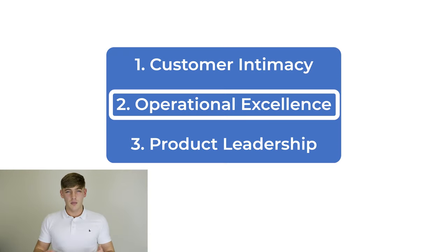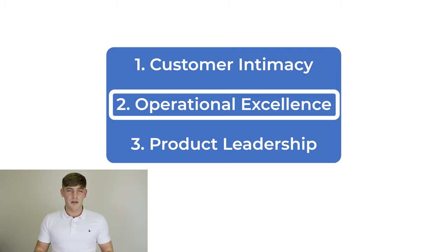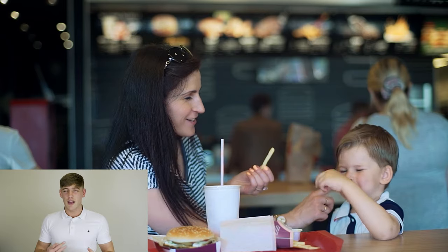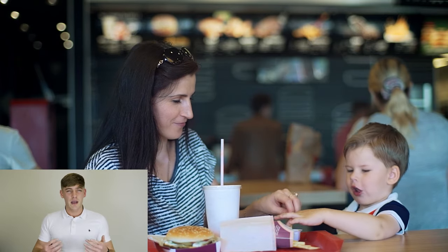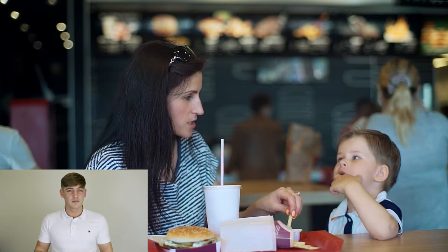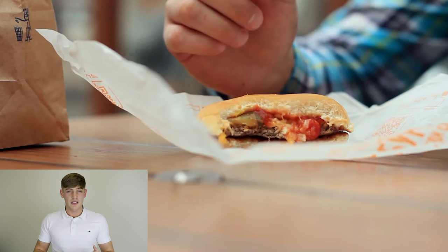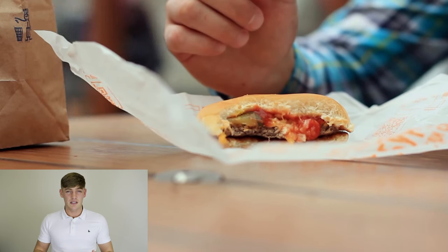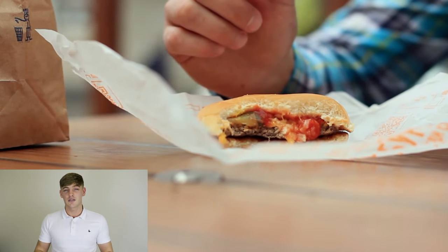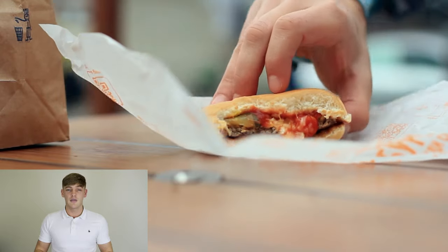The second value discipline is known as operational excellence, which is providing customers with reliable products and services at competitive prices, delivered with minimal difficulty or inconvenience. A great example of who does this really well would be McDonald's, who through their advanced business processes are industry leaders in both price and convenience.